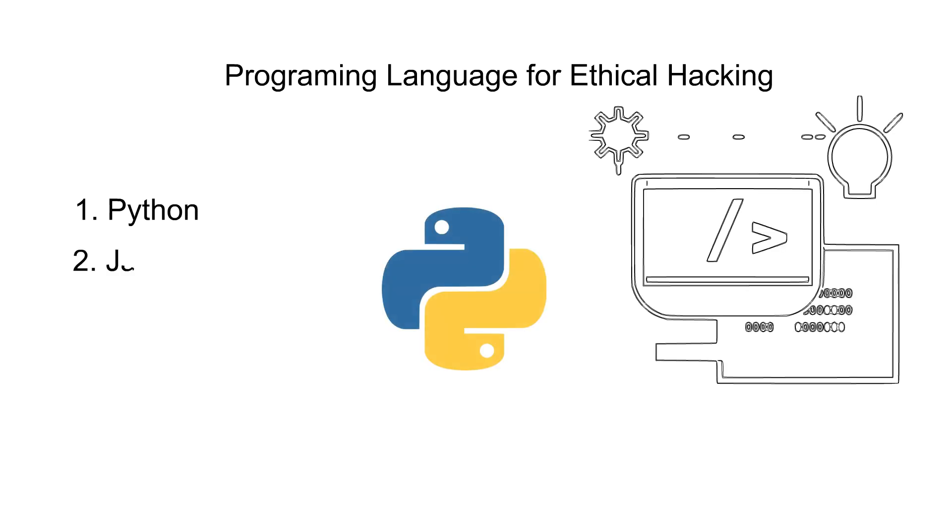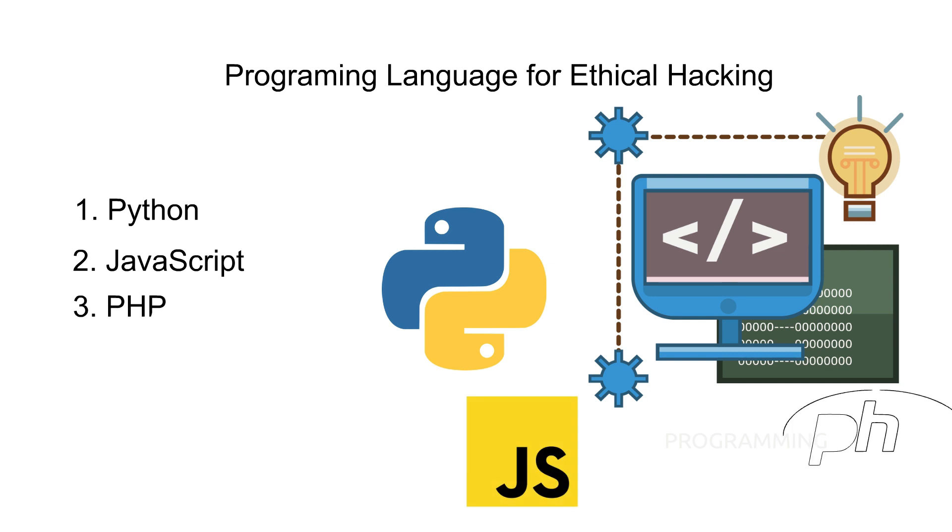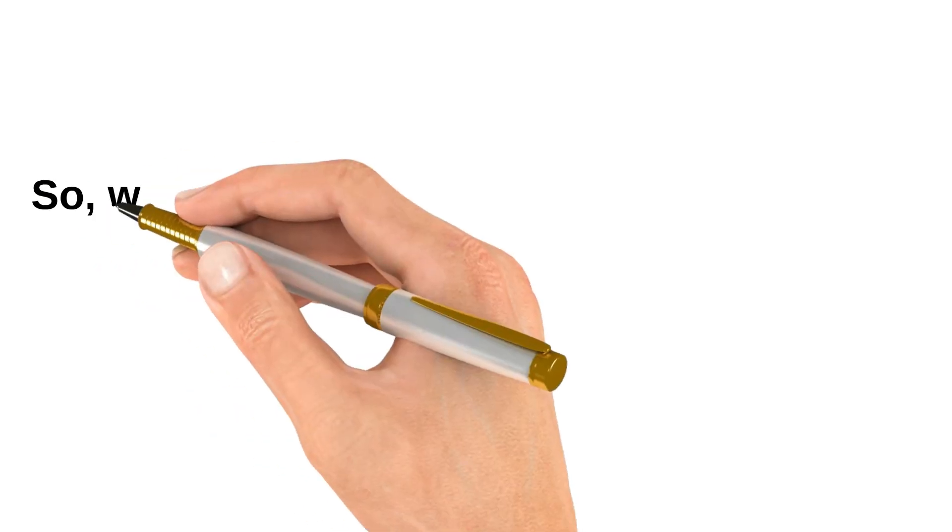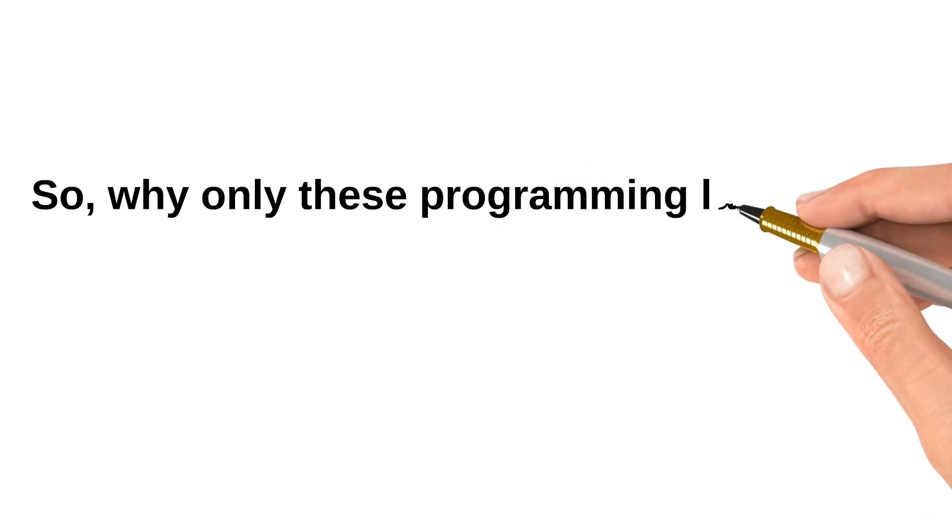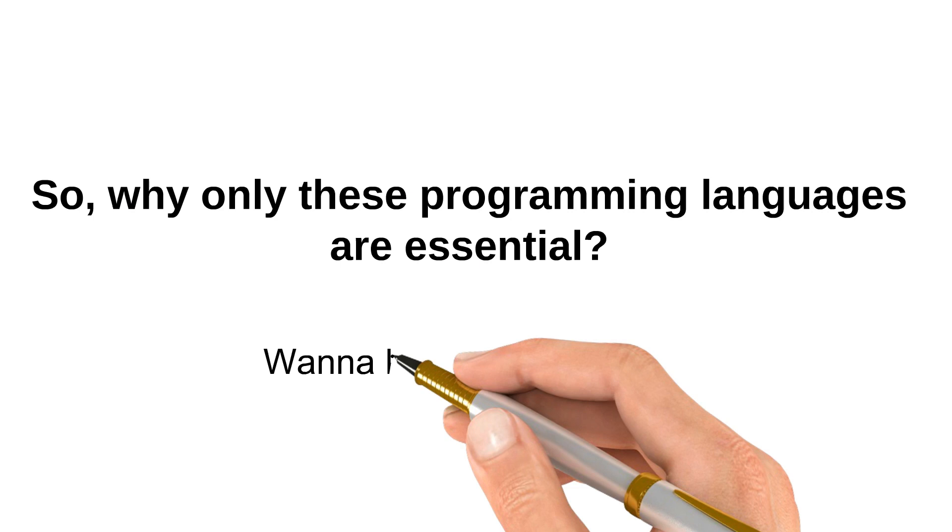First is Python, second is JavaScript, third is PHP, fourth is Java, and fifth is assembly language. Why only these programming languages are essential? Want to know the real reason behind this? Let's dive in.